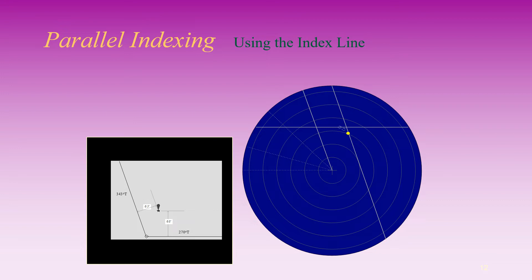Set up the index line for the second leg, 343 degrees true, 0.5 nautical miles away. The beacon will be eastward of the vessel, thus the index line is eastward of the radar origin.